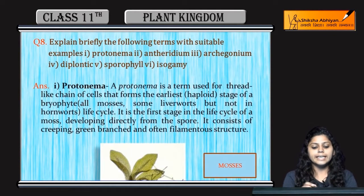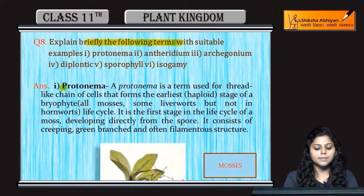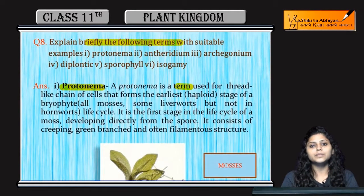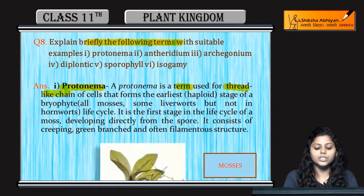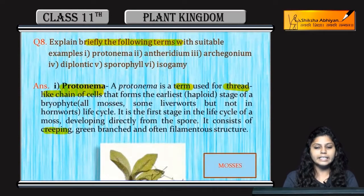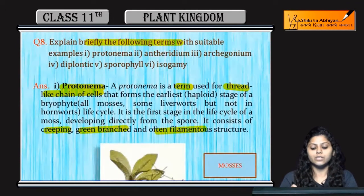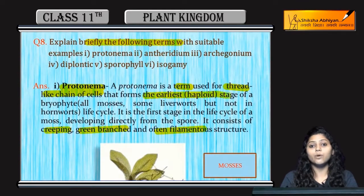Next question is, explain briefly the following terms. First of all, Protonema is a term used for thread-like chains of cells which are creepy green, branched and often filamentous in structure. It is actually the earliest haploid stage of bryophytes.